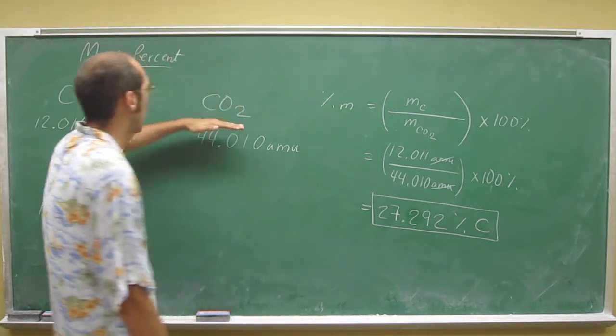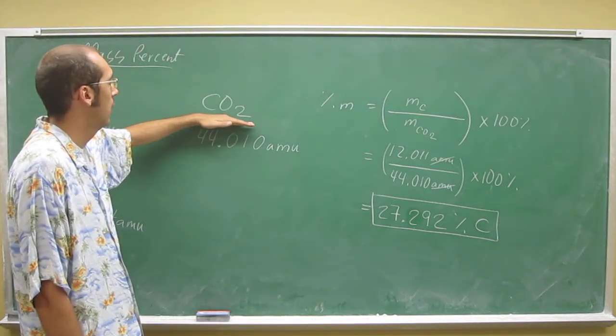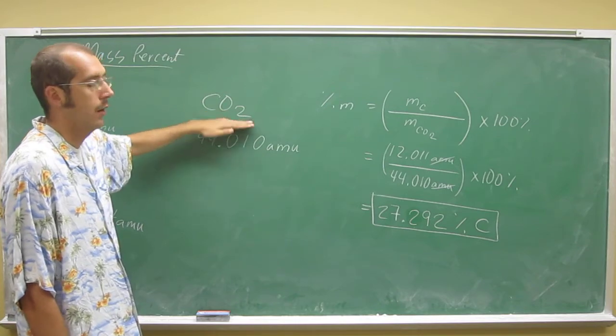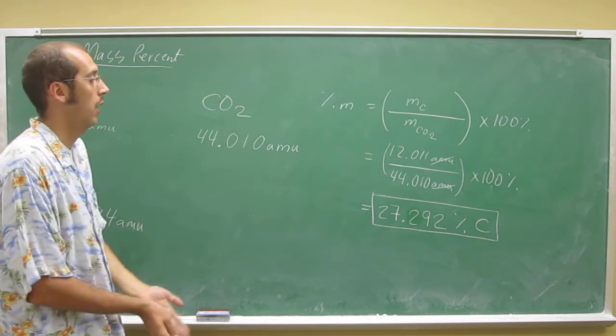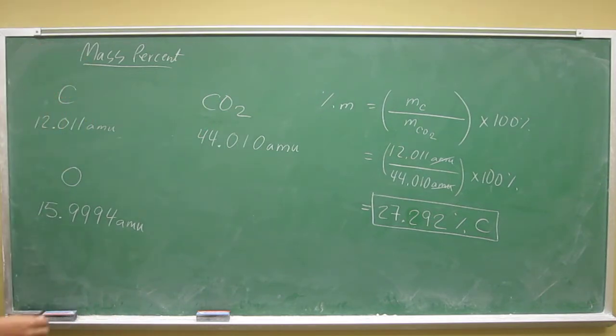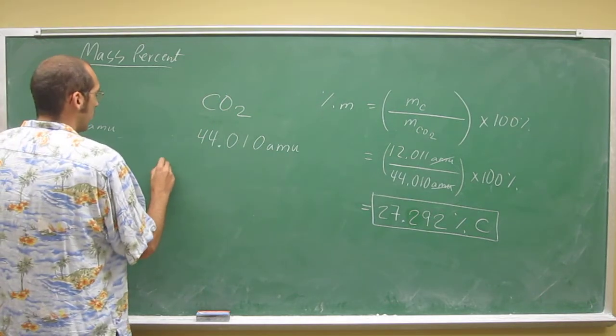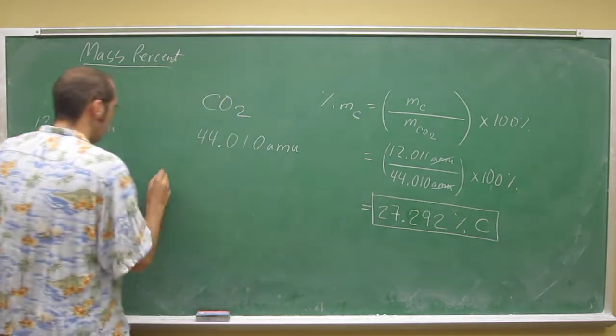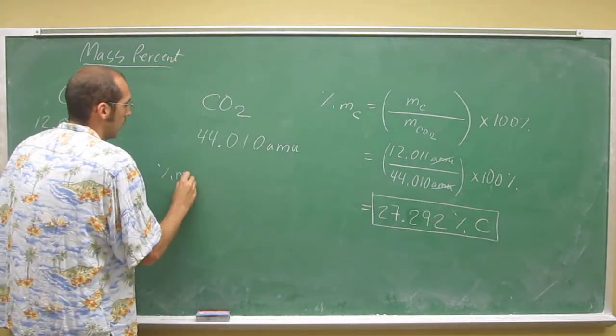We know that carbon dioxide is only composed of carbon and oxygen, and we know the whole of anything has to be 100%. So the percentage of oxygen, the mass percent of carbon, the mass percent of oxygen...